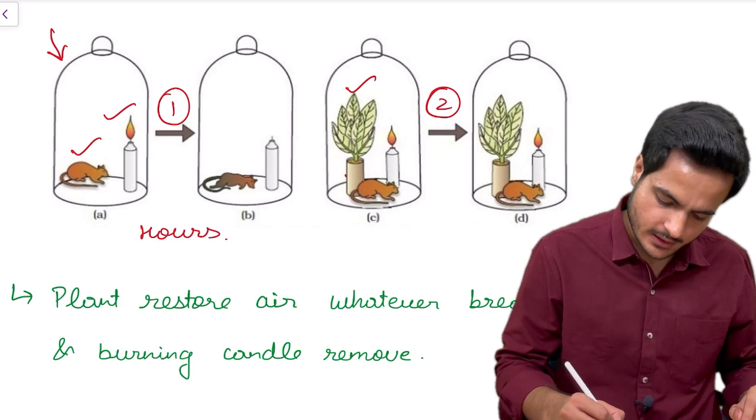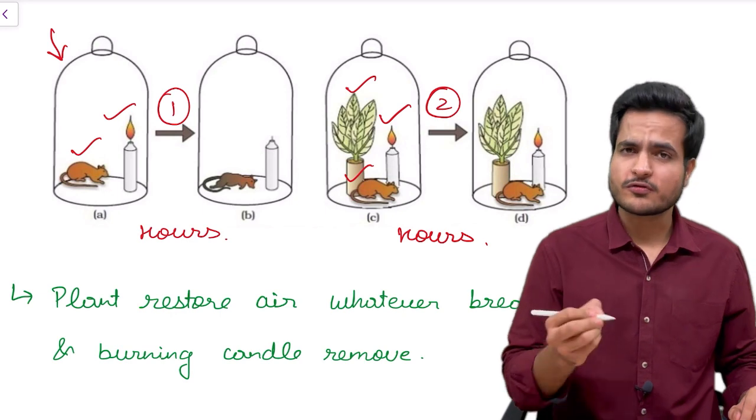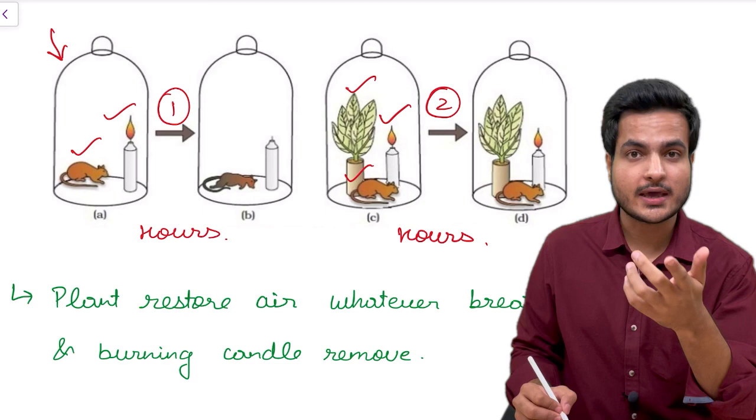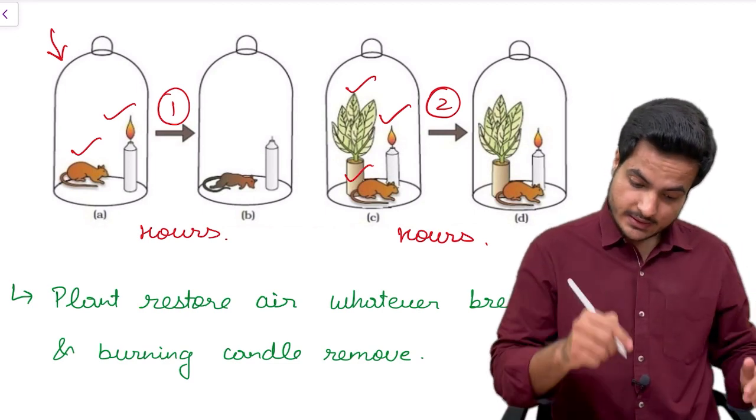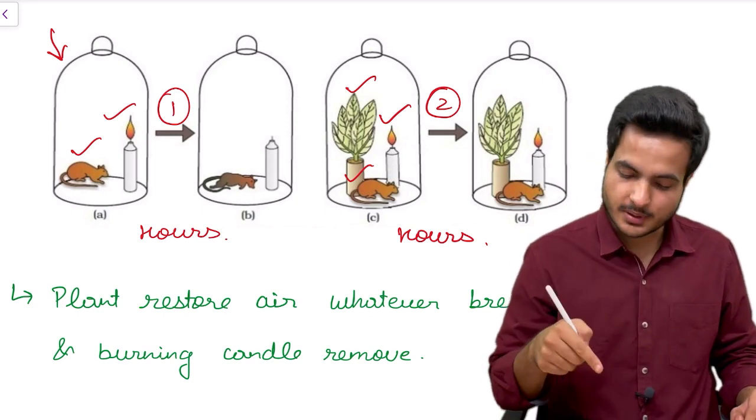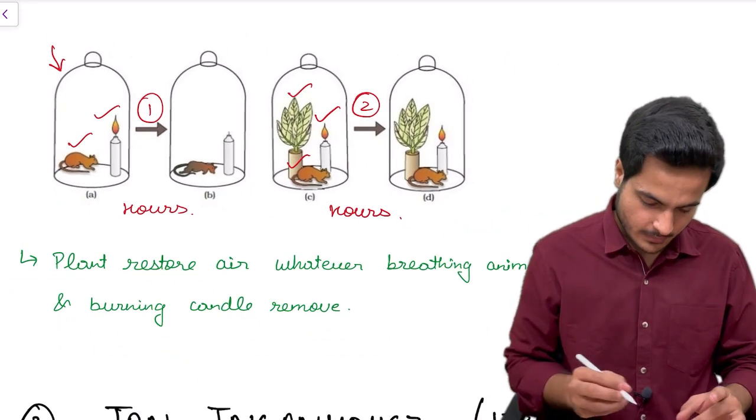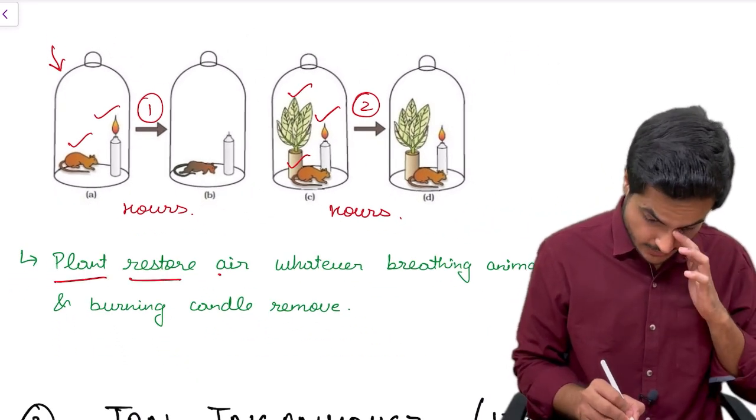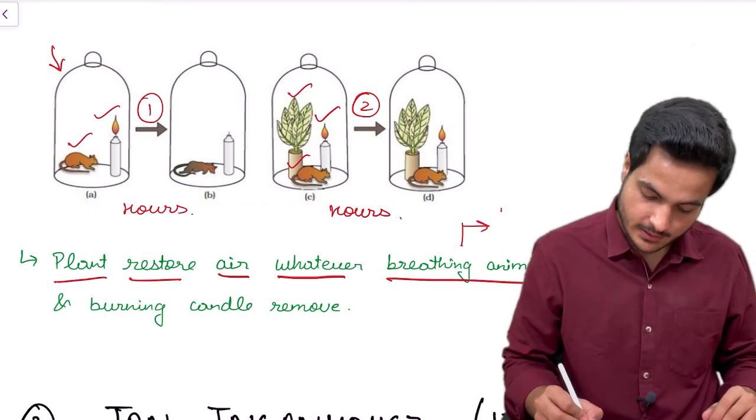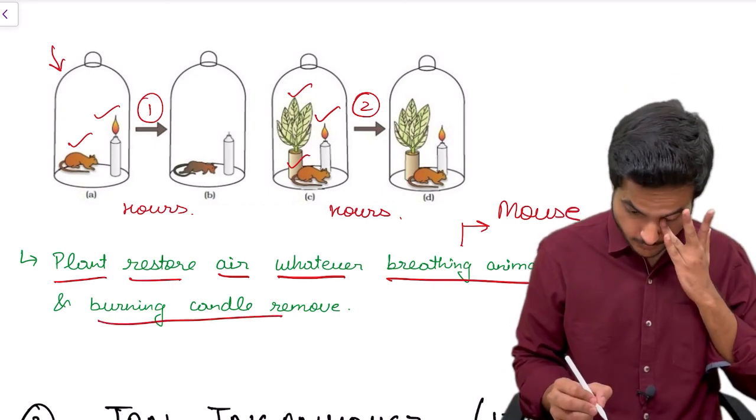Then he added a plant to this experiment. He added a plant, again a living mouse and a burning candle. He again came to the site of experiment after few hours and saw that the candle is still burning and the mouse is also alive. So he said that this plant has added something important to the air which this burning candle and living mouse is removing.